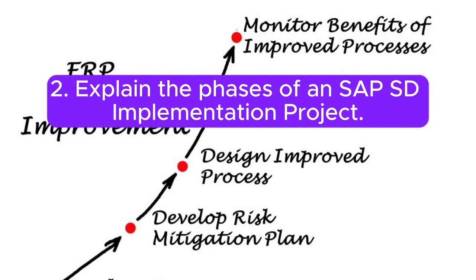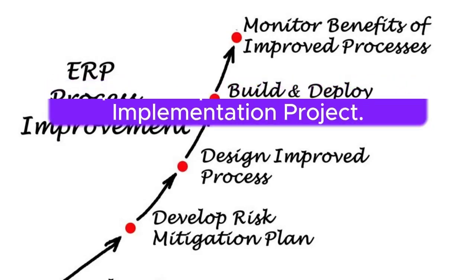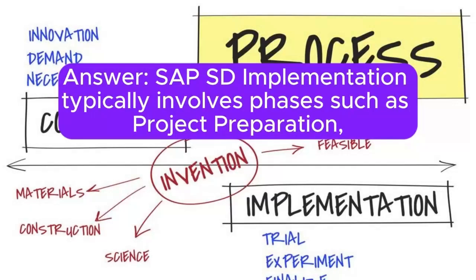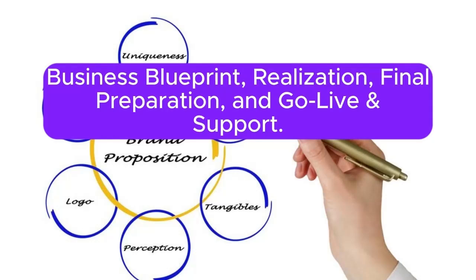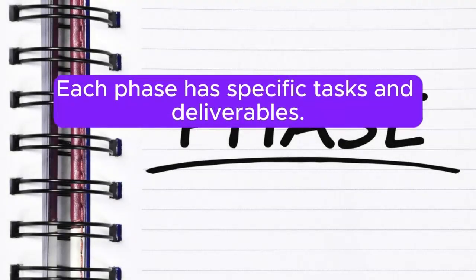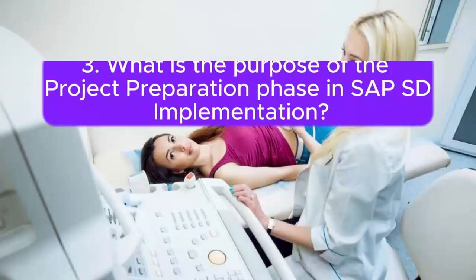Question 2: Explain the phases of an SAP SD implementation project. Answer: SAP SD implementation typically involves phases such as project preparation, business blueprint, realization, final preparation, and go-live and support. Each phase has specific tasks and deliverables.